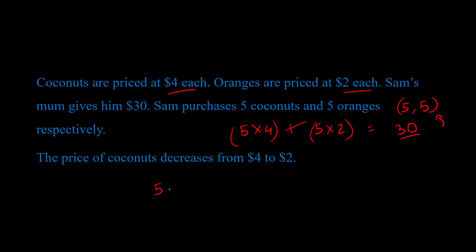She's like, yesterday you purchased 5 coconuts, now they're priced at $2 each and the price of oranges remains the same. That's 5 into 2 again, so that's 5 into 2 into 2, that's $20. So now Sam's mom will only give him $20 and using that money, Sam can purchase 5 coconuts and 5 oranges.